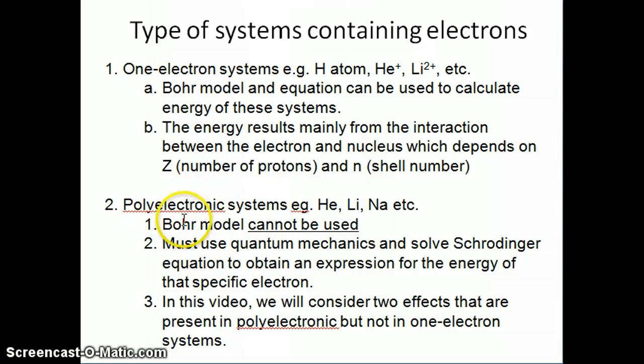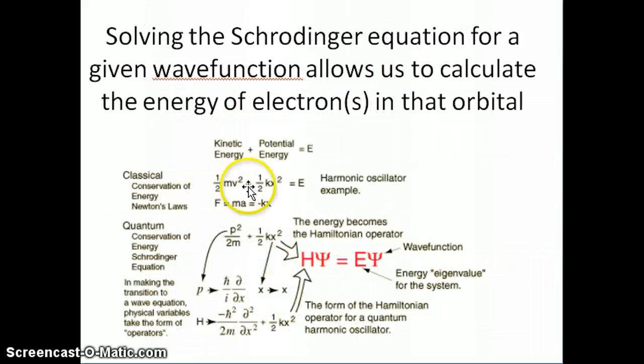So unfortunately for the polyelectronic system, you cannot use the Bohr model to calculate its energy, because remember, that's the whole reason we went to quantum - because the Bohr model doesn't work. So if it works, we would have just used it, but it didn't work, right? So that's why people were looking to find another model that helped explain the behavior of this polyelectronic system. In order to calculate the energy of electrons in these systems, you have to use quantum mechanics. You have to solve the Schrodinger equation to obtain an expression for the energy of that specific electron. And what do I mean by this? I mean exactly what I said in the previous slide, which is to find a wave function, apply the Hamiltonian operator on the wave function, and obtain a series of energy values that correspond to that particular wave function.